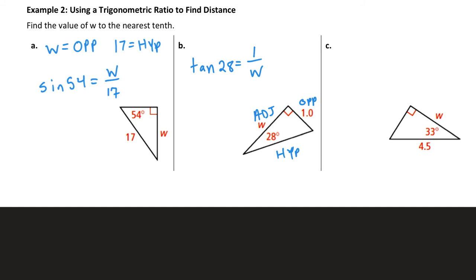In part C, 33 is our reference angle. W is the adjacent leg and 4.5 is the hypotenuse. So in this case I would use the cosine of 33, which equals the adjacent leg W over the hypotenuse 4.5. Again, in the next video I'm going to describe how to solve these equations. So we've got them set up — I left space so we can learn to solve them later.